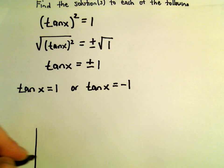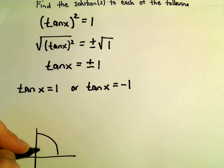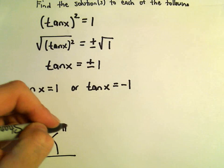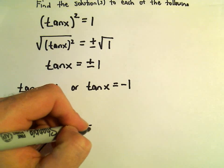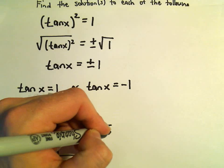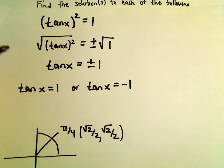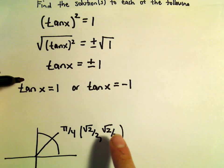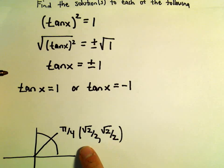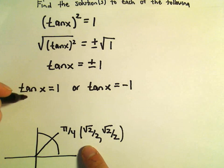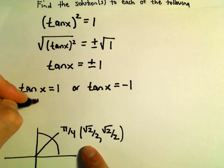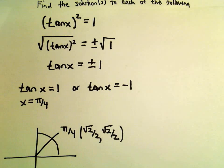If you remember unit circle stuff, at pi over 4, we get root 2 over 2 comma root 2 over 2. Tangent is simply defined to be sine over cosine. Sine would be root 2 over 2, cosine would be root 2 over 2. So one of our solutions would be at x equals pi over 4. So tangent of pi over 4 gives us 1.